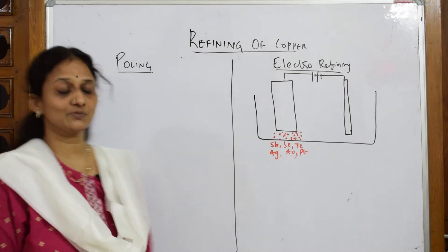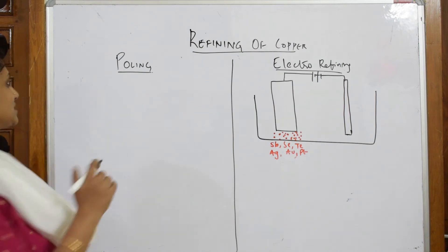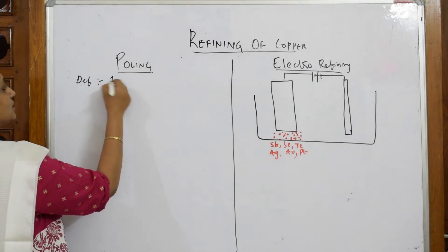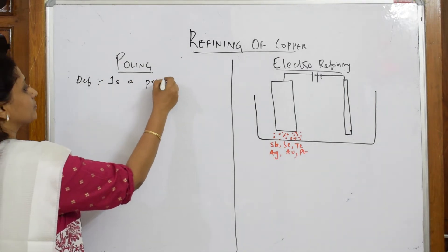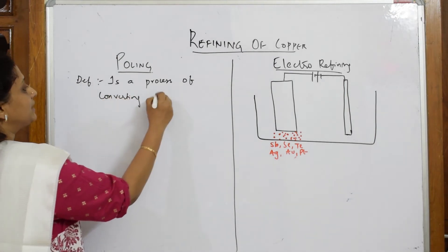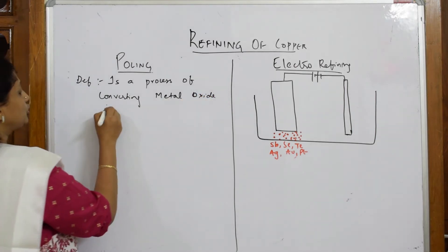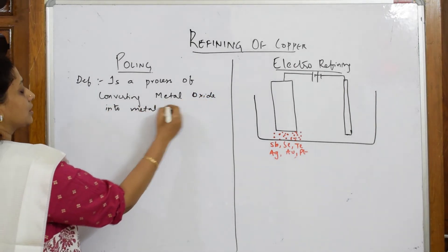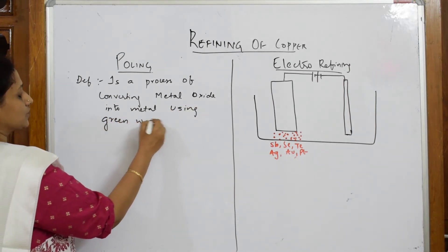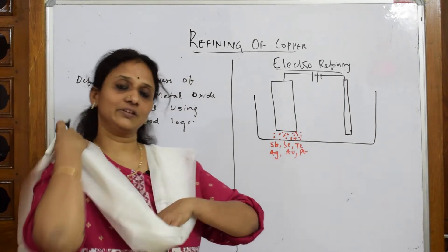Refining of copper is studied under two headings: one is the polling method and the other is electro-refining. If the definition of polling is asked in the exam, polling is a process of converting metal oxide into metal using green wood logs.